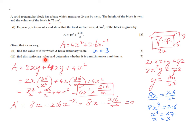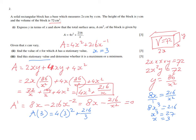Next, find the stationary value and determine whether it's a maximum or minimum. To find the stationary value of A, substitute x equals 3 into the equation: A equals 4 times 3 squared plus 216 over 3. That gives 4 times 9, which is 36, plus 216 divided by 3, which is 72. So 36 plus 72 equals 108. That is the stationary value of A.